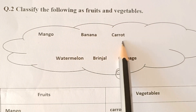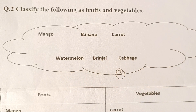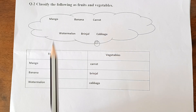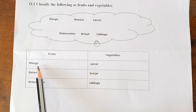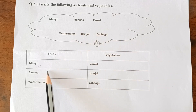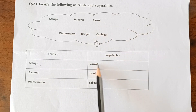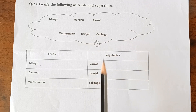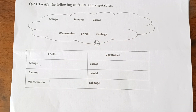Next question: Classify the following as fruits and vegetables — Mango, Banana, Carrot, Watermelon, Brinjal, and Cabbage. We will differentiate into Fruit column and Vegetable column. Fruits: Mango, Banana, Watermelon. Vegetables: Carrot, Brinjal, Cabbage.